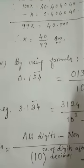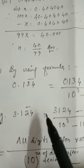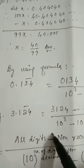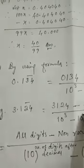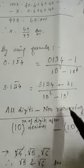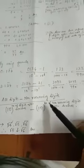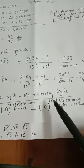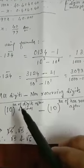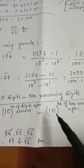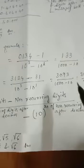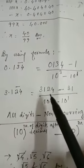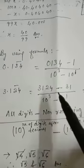Let us solve one more sum. I have taken one more example. The number is 3.124 with bar over 2 and 4. So two numbers are repeating: 2 and 4. Same way, again here use the formula. The formula: all digits written together minus non-recurring digits, divided by 10 to the power number of digits after decimal, minus 10 to the power number of non-recurring digits after decimal. So you write all digits together: 3, 1, 2, 4, minus only the non-recurring digits, that is 31.